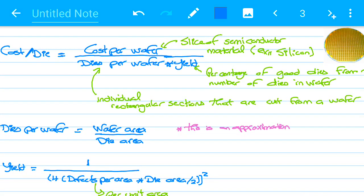To calculate the cost per die we divide the cost per the whole wafer over the dies per wafer times yield. So what do we have from here? We have the cost per wafer. The cost is the amount of money I pay for the wafer shown here.